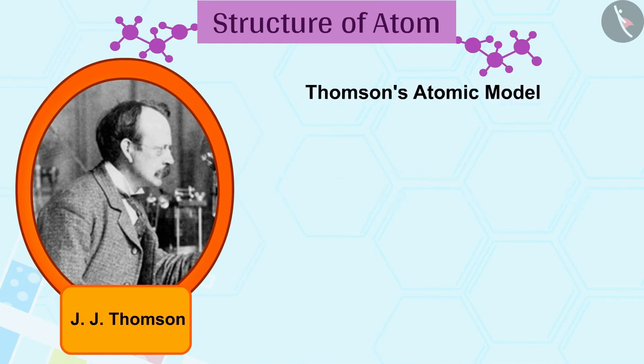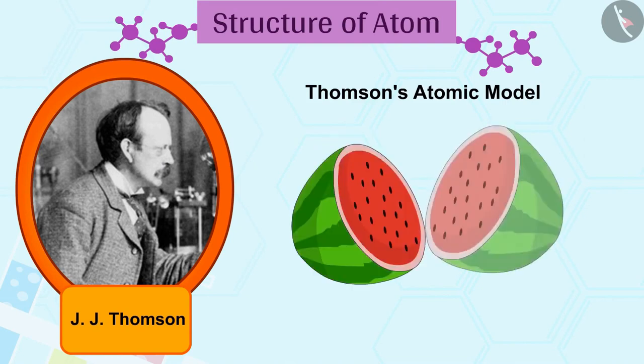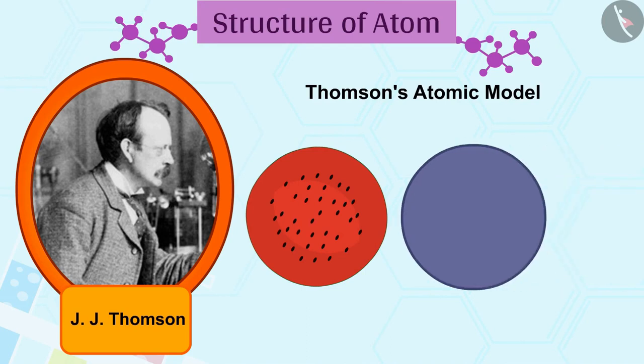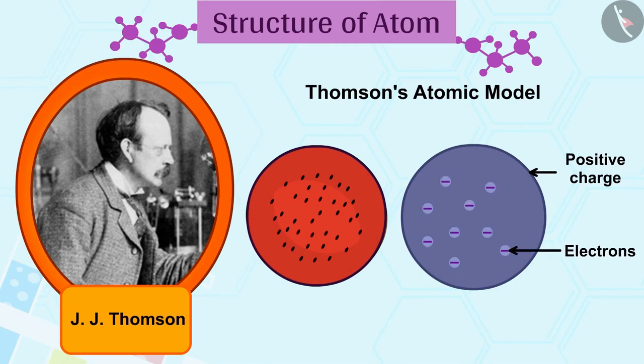Thomson presented a model related to the structure of an atom that was like a watermelon. According to this, the positive charge in the atom is spread all over like the red edible part of the watermelon while the electrons are studded in the positively charged sphere like the seeds in the watermelon.